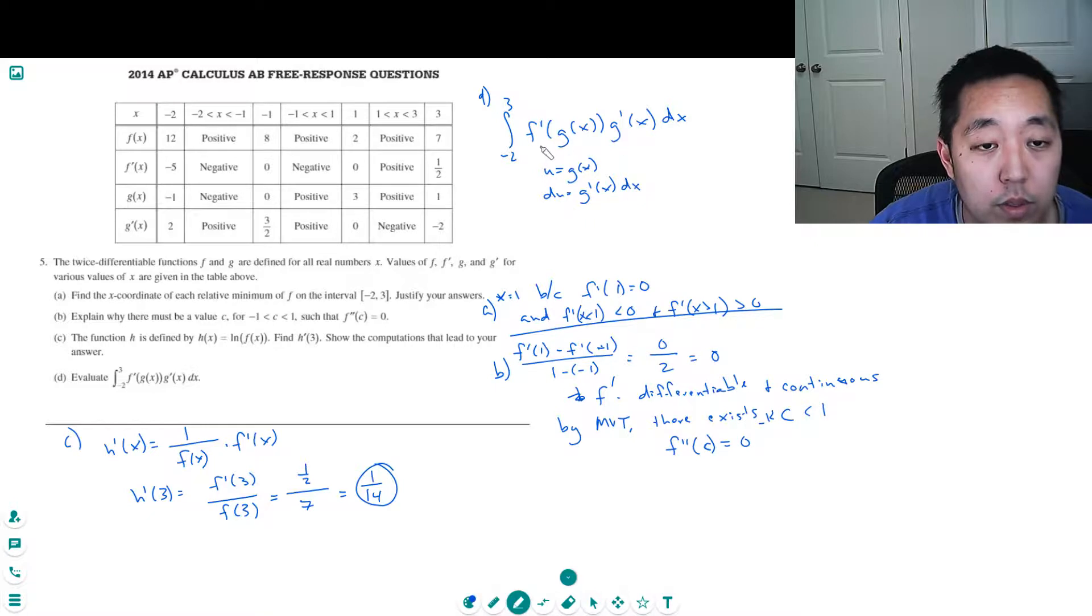Now I change the bounds. u of negative 2, which is g of negative 2, equals negative 1. And u of 3, which is g of 3, equals 1.